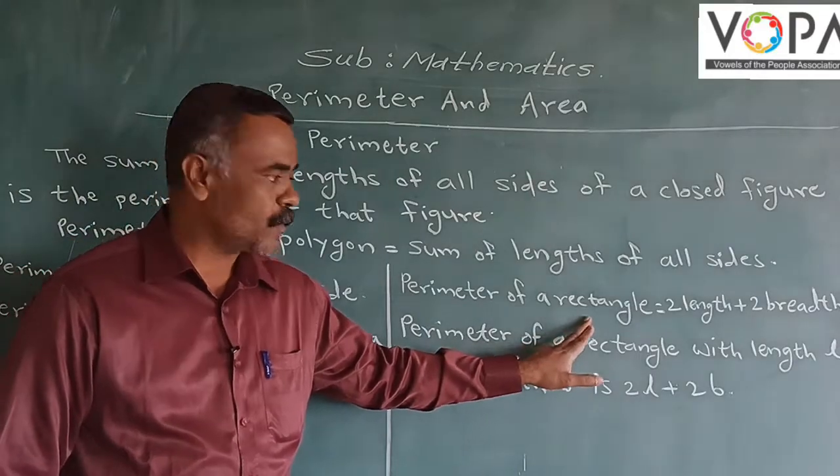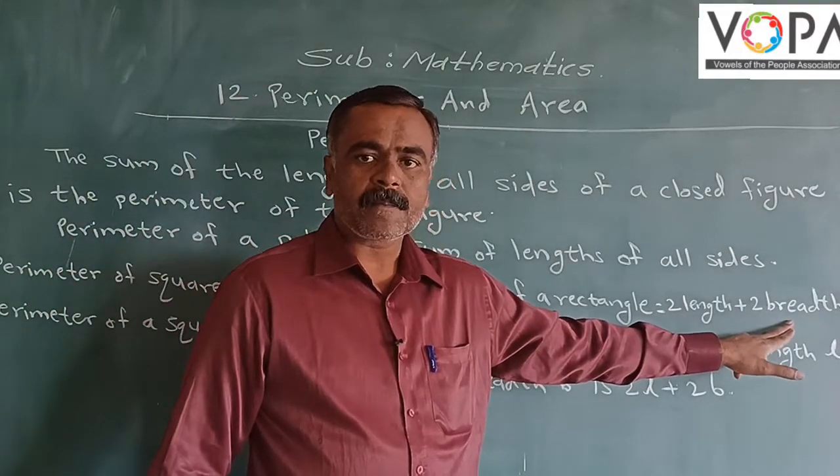Perimeter of a rectangle is equal to 2 into length plus 2 into breadth.